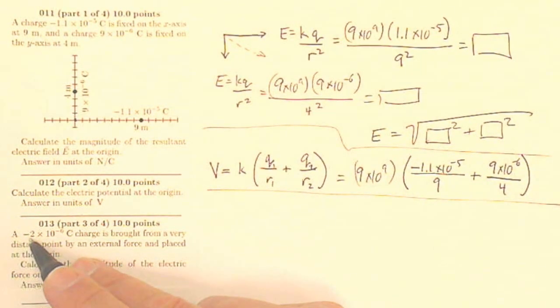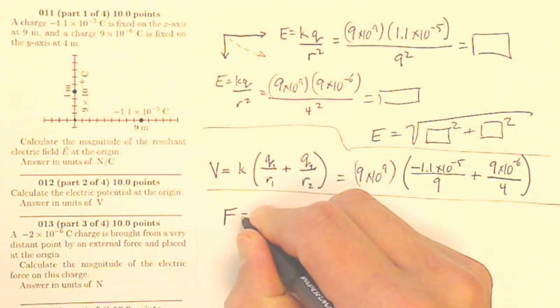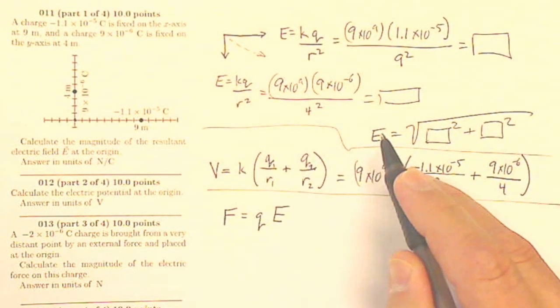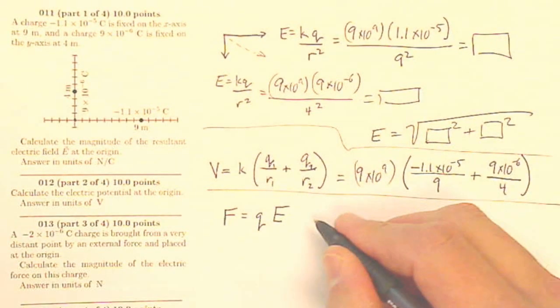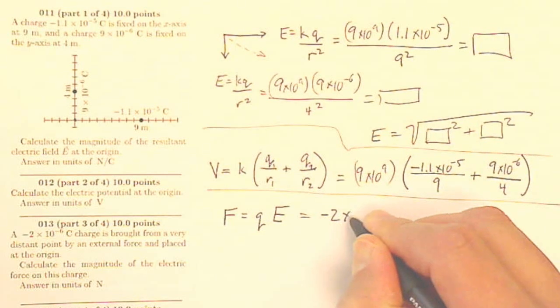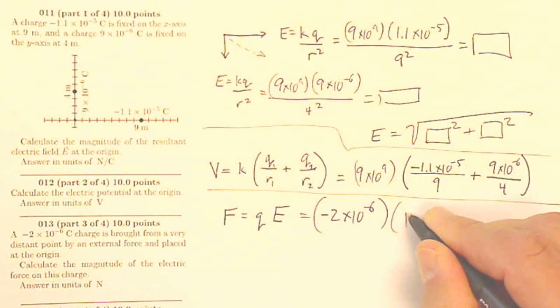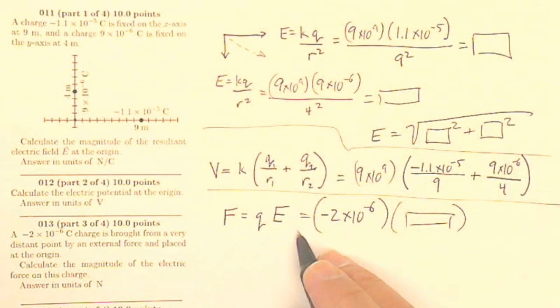Question 13 says, a negative 2 times 10 to the minus 6th charge is brought from a very distant point by an external force and placed at the origin. Calculate the magnitude of the electric force on this charge. Well now I know that my force is going to be Q times my E field. Well I know my magnitude of my E field from this answer over here. So if I just take this Q from this problem, so that's going to be negative 2 times 10 to the minus 6th times my E field that I got up here. My answer to number 11 is my E field. So F equals QE.